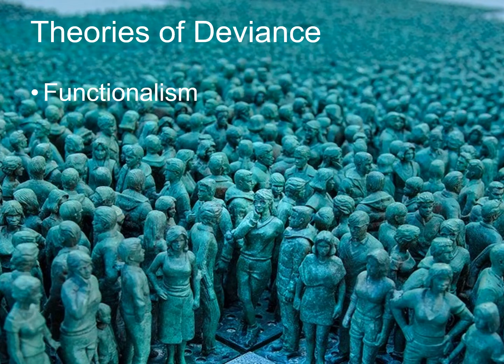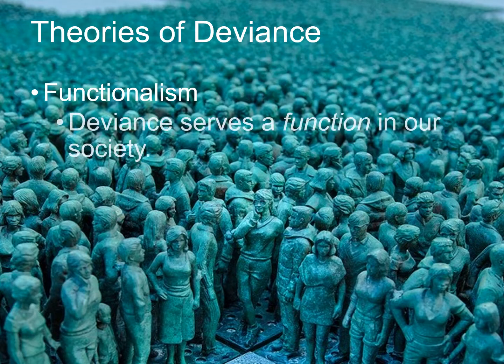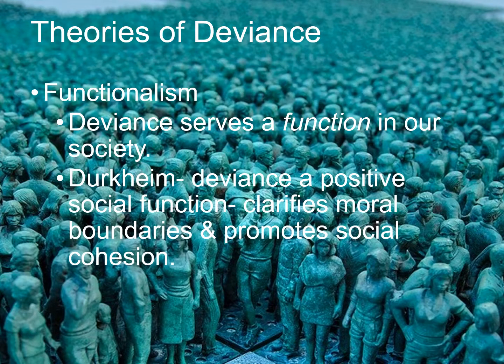Let's talk about some theories of deviance. First, from the perspective of functionalism. Functionalism maintains that deviance serves a function in our society. The sociologist Durkheim says that deviance is a positive social function, that it clarifies moral boundaries and promotes social cohesion — that without seeing deviant behavior, we would have a hard time classifying what is normal.